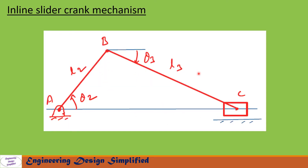Here is a typical inline slider crank mechanism. The fixed link is given, and the crank link has length L2. The angle between the fixed link and the crank is theta2. The coupler link has angle theta3 measured clockwise from horizontal, while theta2 is counterclockwise. So theta2 is taken as positive and theta3 as negative. C is the slider. We will derive equations to find displacement, velocity, and acceleration of the slider and the coupler.